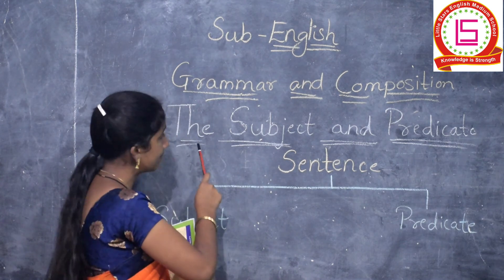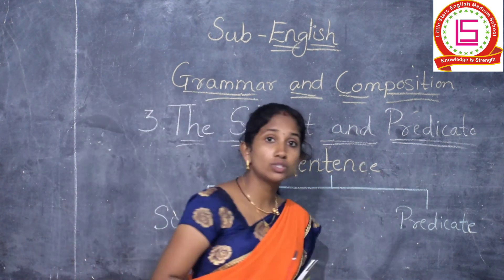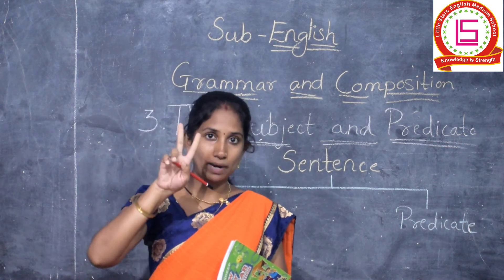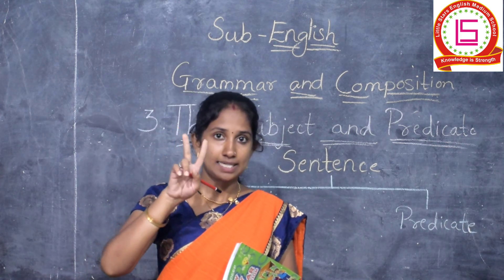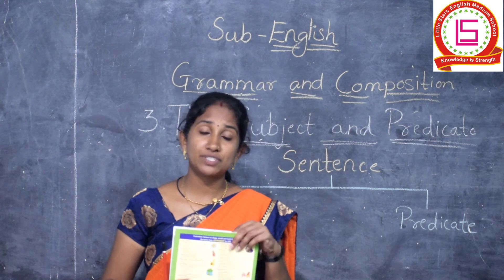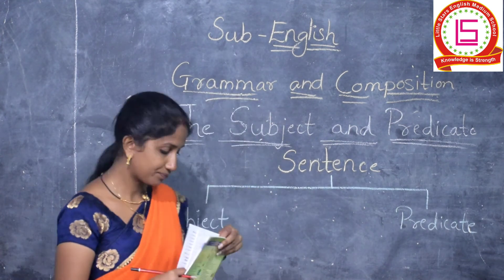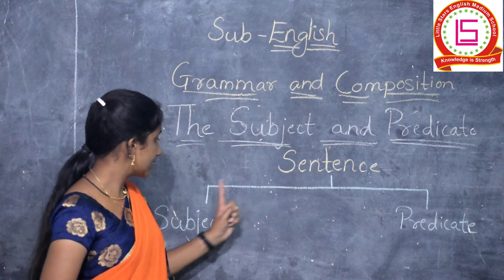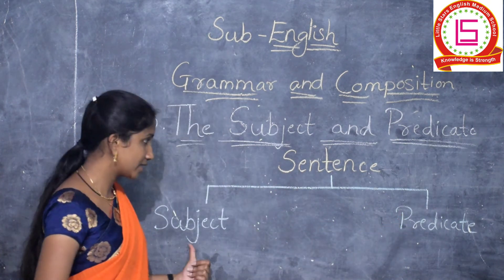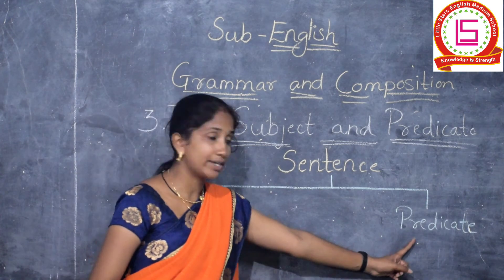The third chapter is the subject and predicate. So children, each sentence has two parts. Sentence is divided into two parts — one is subject and another is predicate. See here, sentence is divided into two parts: subject and predicate.